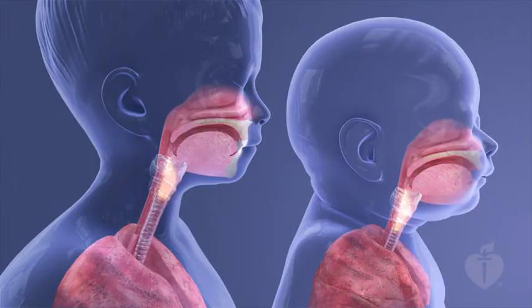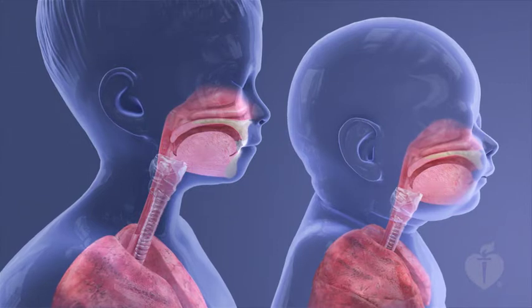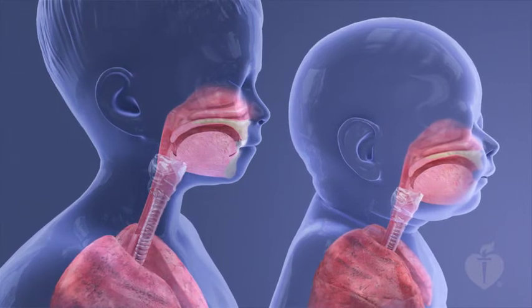In infants and toddlers, the tongue and epiglottis are relatively large and can contribute to airway obstruction. In addition, the larynx is positioned more superiorly and anteriorly than in adults. Note that the airway is always anterior to the esophagus, and the cricoid cartilage is the only complete cartilage ring located below the vocal cords. Keep these anatomic and physiologic details in mind when we discuss various respiratory emergencies and their treatment.